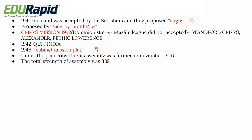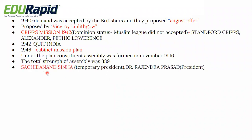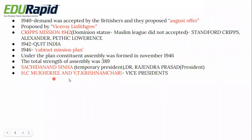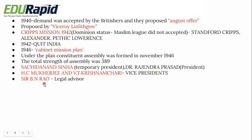The total strength of the Constituent Assembly was 389. Sachchidananda Sinha was the temporary president of the Constituent Assembly, and Dr. Rajendra Prasad was the president. The Constituent Assembly had two vice presidents: H.C. Mukherjee and V.T. Krishnamachari. The legal advisor for the Constituent Assembly was Sir B.N. Rau.